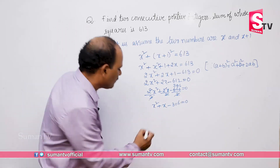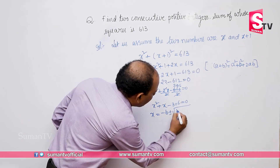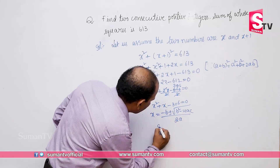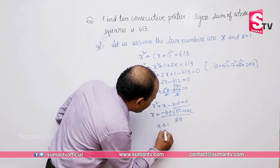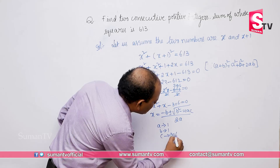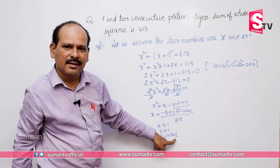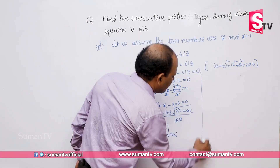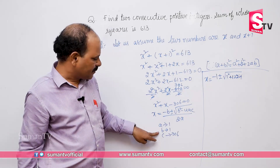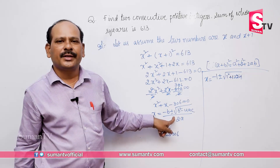Now let us simplify this quadratic equation using the quadratic formula: x equals minus b plus or minus root of b square minus 4ac, all over 2a. Here a is equal to 1, b is equal to 1, and c is the constant which is minus 306.